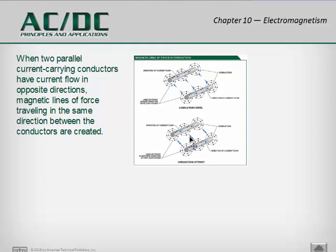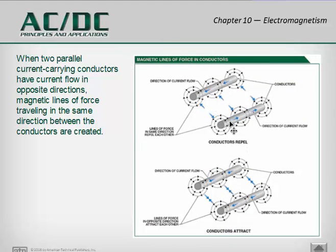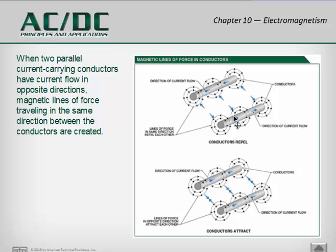If you had electrical current traveling through two wires and that current is flowing in opposite directions, the two wires would move away from one another. Whereas if you had electrical current traveling in the same direction in both wires, the two wires would be attracted to one another — opposites repel and likes attract. This could be important with very high voltage cables, which must be kept a certain distance apart; otherwise they would attract and possibly cause an arc.